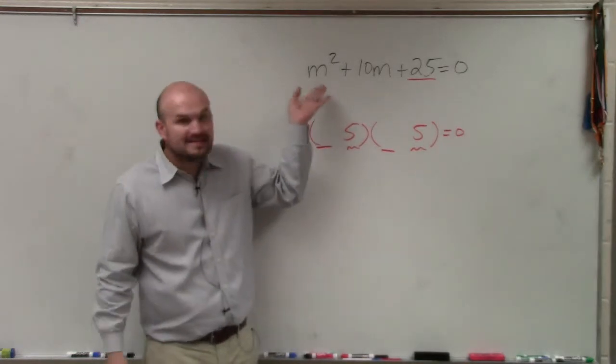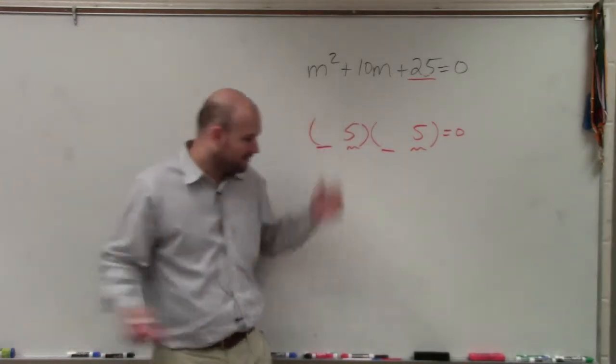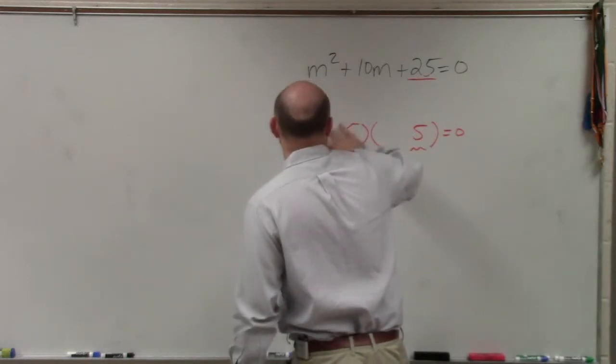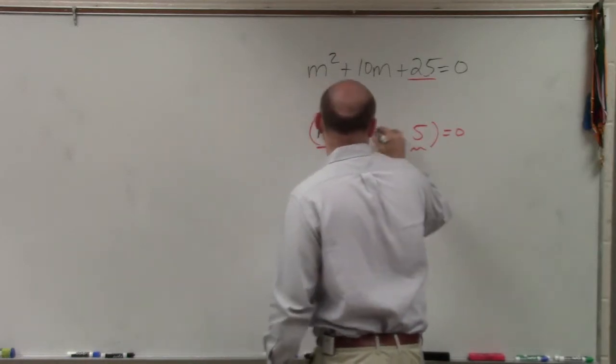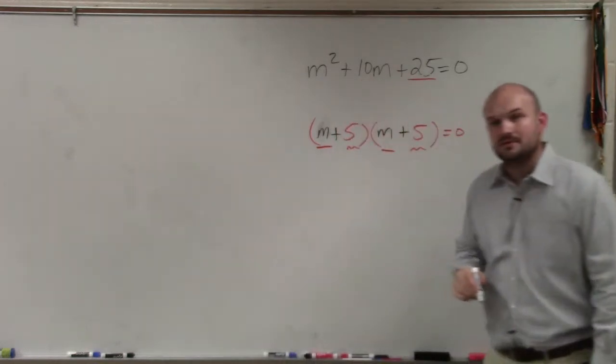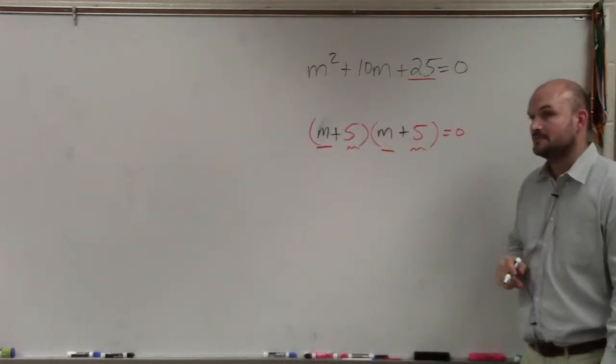Then I look at my first term. Is m squared a square number? Yeah, of course. It's x. Oh, I'm sorry, m times m. And that's a positive 5 and a positive 5. And m equals negative 5. OK, right.